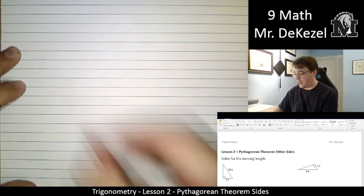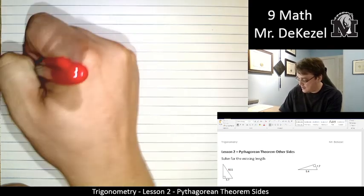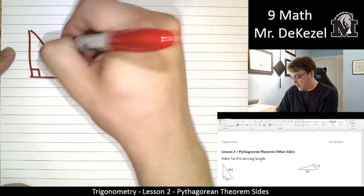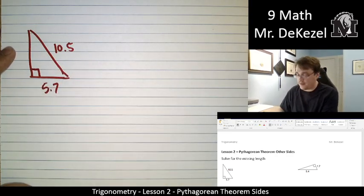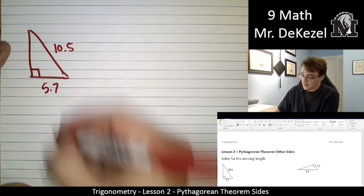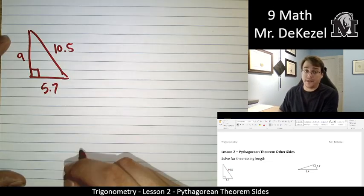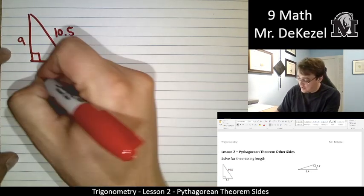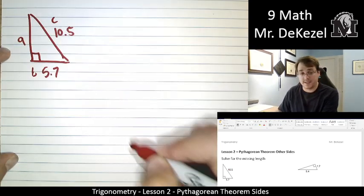We have a triangle that looks like this, and its right angle is right there. It has 10.5 as this side and 5.7 as this side. This is our unknown side. I'm going to call it A. It could be called A or B, and nothing would change in our problems, but I'm going to call it A. And of course, this will be B, and the one across from the right angle, the longest side, will be C.